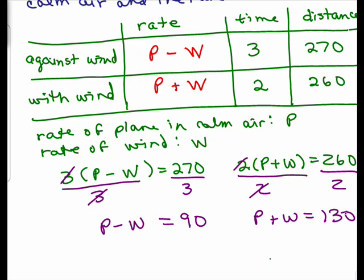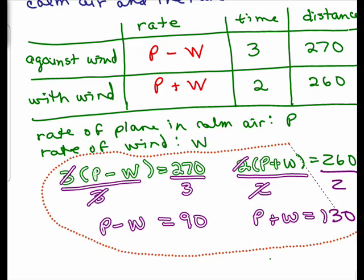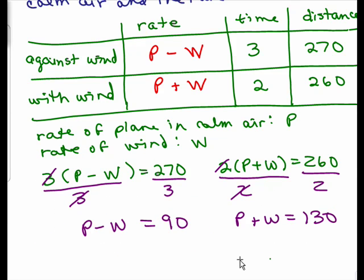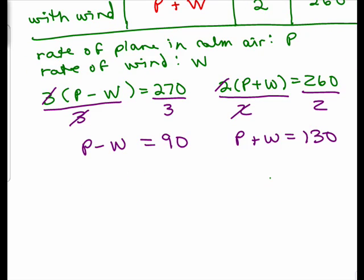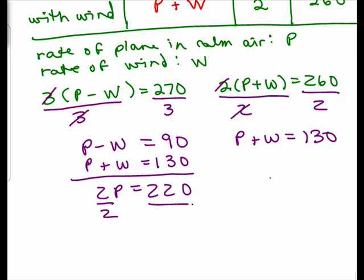If you didn't do that, you would have 3P - 3W = 270 and 2P + 2W = 260, and then you'd use the addition method with bigger numbers. But by doing this simplification, it's going to be really easy. So I'm going to put the second equation underneath: P + W = 130. How nice, the W's cancel if I add. So I have 2P = 220. Divide both sides by 2, and P = 110.